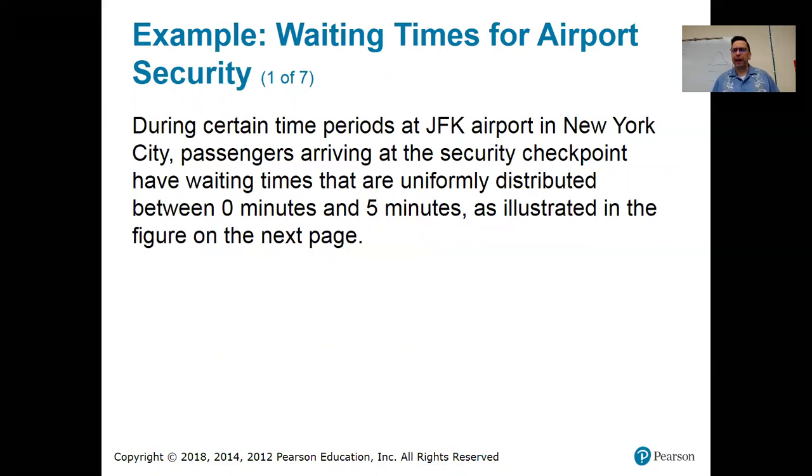Okay. So here's our example for uniform distribution. During certain time periods at JFK airport in New York, passengers arriving at the security checkpoint have waiting times that are uniformly distributed between zero and five minutes. I don't believe that for a second. I have actually been through JFK airport. All right. I'd have an easier time believing that it's like between 15 minutes and two hours. All right. But anyway.